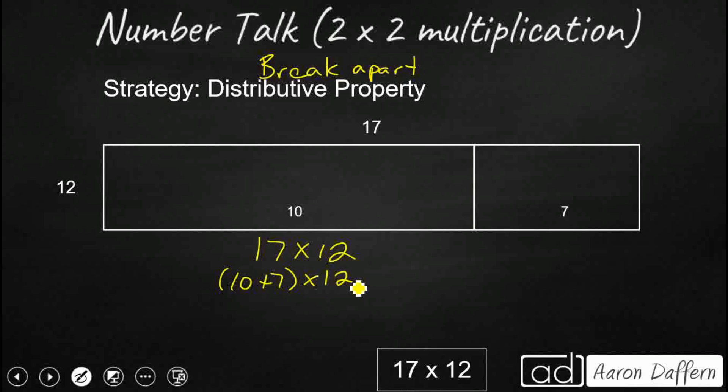And we're going to take our 10 plus 7, and we're going to use that to create partial products. So we're going to take our 12, and instead of multiplying the 12 by the 17, we're going to multiply the 12 by those two addends, and then add those up together. So this is what it looks like. Instead of 17 times 12, we're going to first look at 10 times 12.